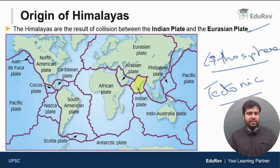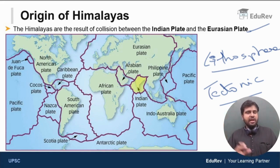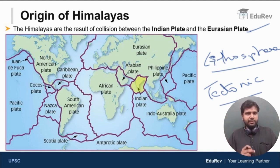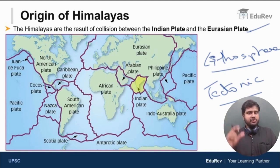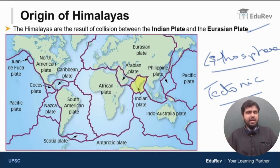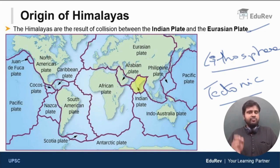All these are minor tectonic plates. You also have the Antarctic plate which is a major tectonic plate. The first 100 kilometers which is solid is called lithosphere, and this solid lithosphere is broken into multiple tectonic plates — both major and minor. These tectonic plates are not stationary; they are constantly in movement, moving around from one place to another.